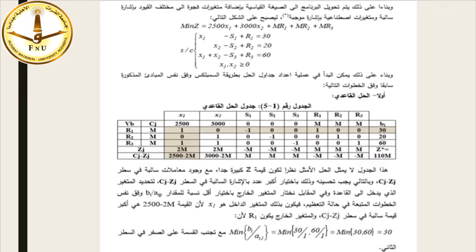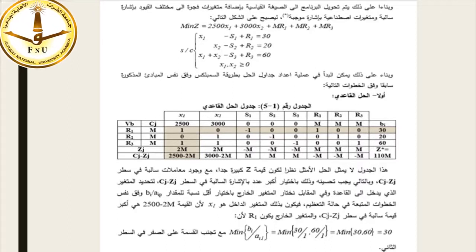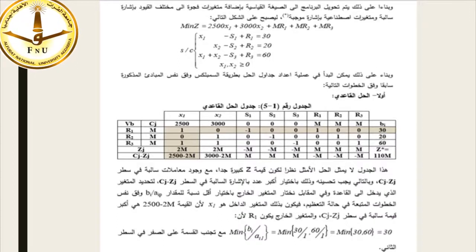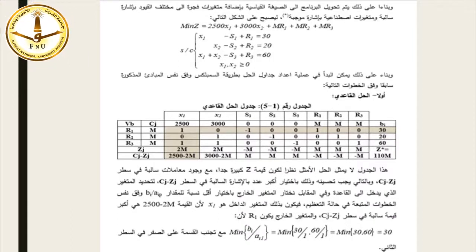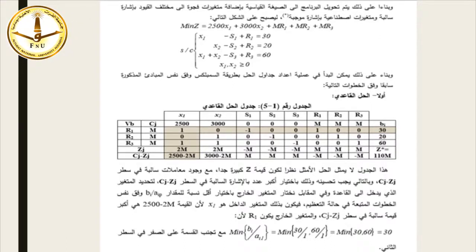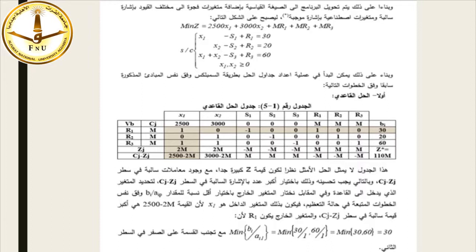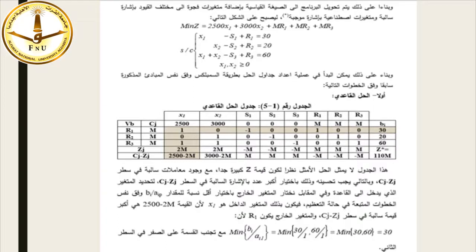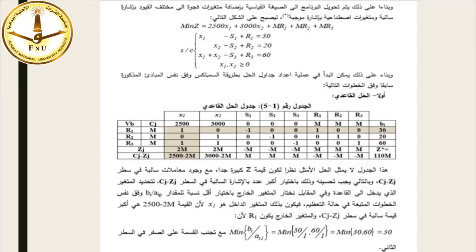وبناءً على ذلك يمكن البدء في عملية إعداد جداول الحل بطريقة السيمبليكس وفقاً للخطوات التالية. أولاً: الحل القاعدي. نلاحظ أن قيمة Z كبيرة جداً مع وجود معاملات سالبة في سطر Cj-Zj، وبالتالي يجب تحسينه باختيار أكبر قيمة بالإشارة السالبة في سطر Cj-Zj لتحديد المتغير الداخل، وأقل نسبة للمقدار Bi لتحديد المتغير الخارج.